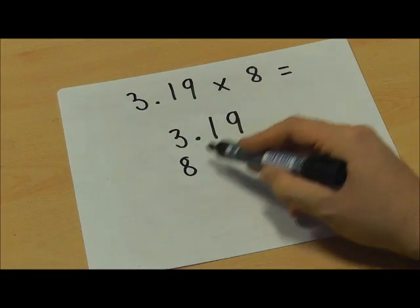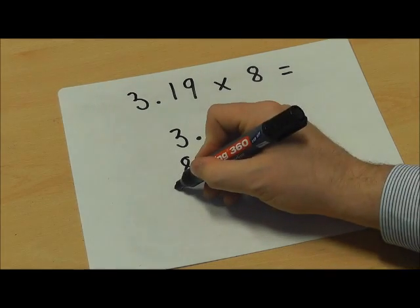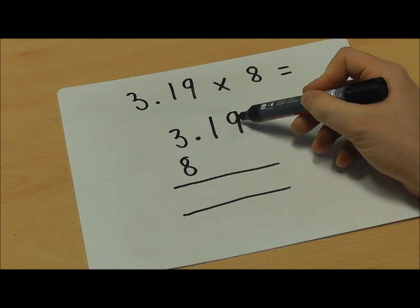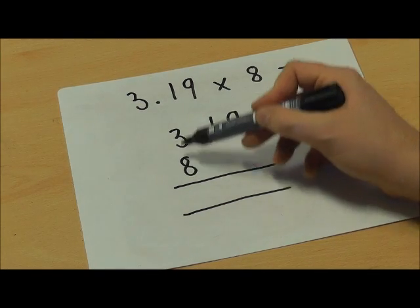So I'm going to do 3.19 multiplied by 8 looking like that. As with all of the other multiplication methods we now simply do the top number multiplied by the bottom number.